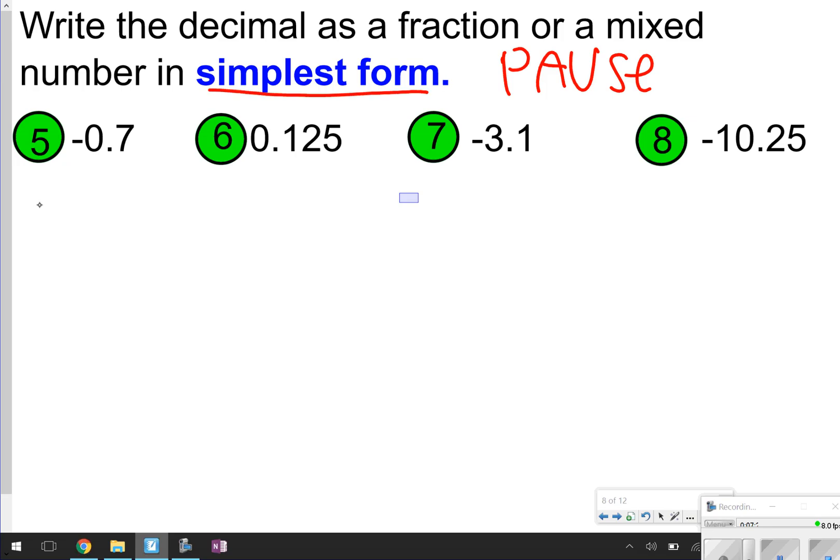Number 5 is going to be negative 0 and 7/10. So, you have a 7 on top and the 10 on the bottom. Cannot be simplified, so that's your final answer.